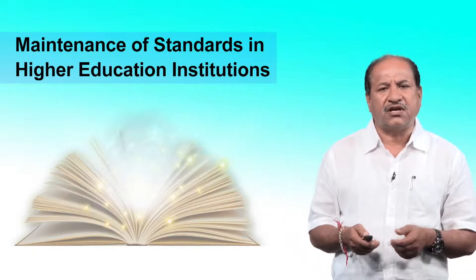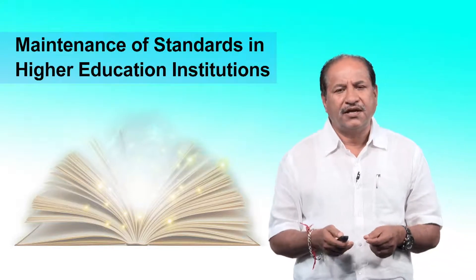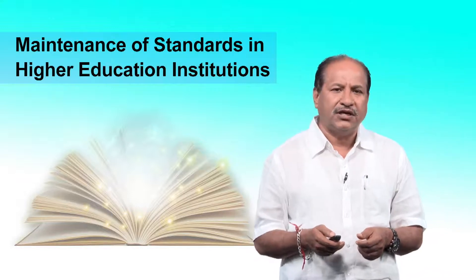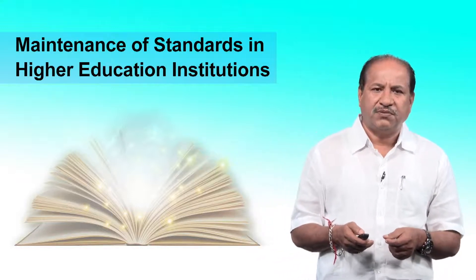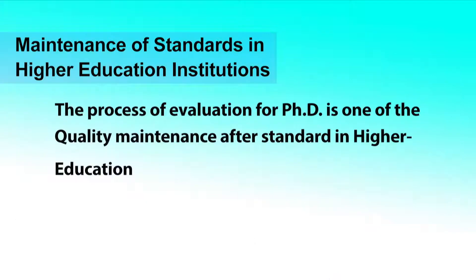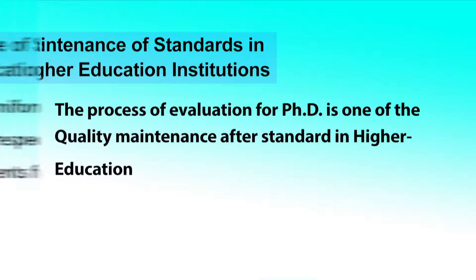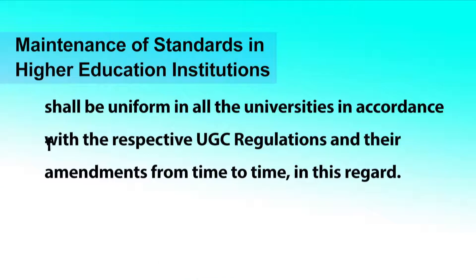The first recommendation is regarding maintaining the standard in the evaluation of PhD theses. The process of evaluation for PhD theses is one of the quality maintenance measures of the standard in higher education. The University Grants Commission is expecting uniformity across all universities in the system to evaluate the PhD evaluation process.